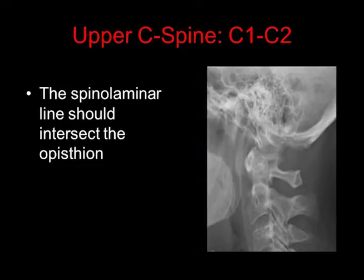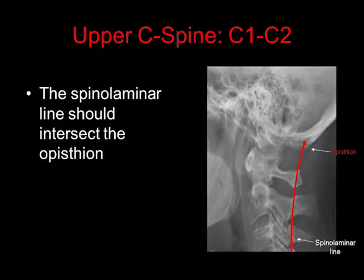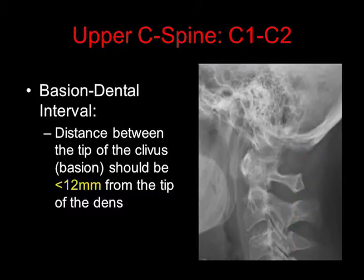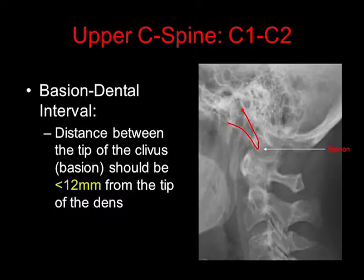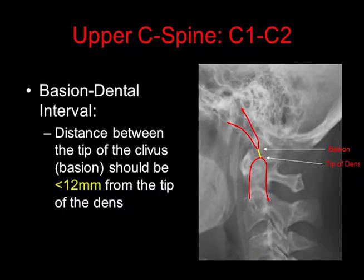In addition, the spinolaminar line should always intersect the opisthion. The opisthion is the bony protuberance at the base of the occipital bone. Also look at the basion-dental interval — this is the distance between the tip of the clivus, otherwise known as the basion, and the tip of the dens. This interval should be less than 12 mm.